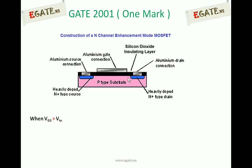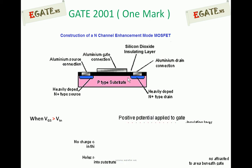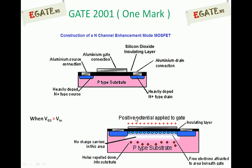When VGS is greater than VTN — if the gate-to-source voltage is greater than the threshold voltage — a channel is going to be created near the silicon dioxide layer. Look at the difference: previously there was no channel, now there is a channel of electrons. These circles imply free electrons attached to the area beneath the gate. This forms an inversion region. Previously this region consisted of holes because of the P-type substrate; now that region is replaced with electrons — opposite charge carriers — so this region is called the inversion charge region.